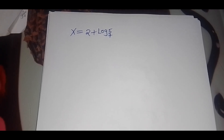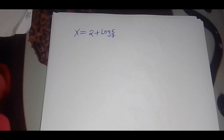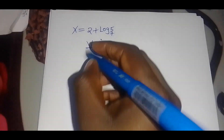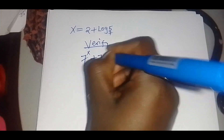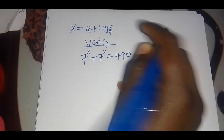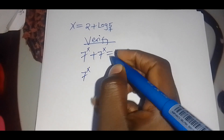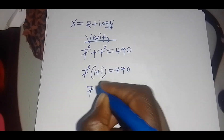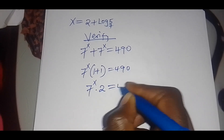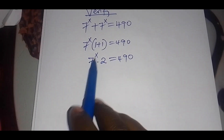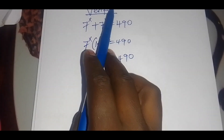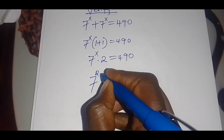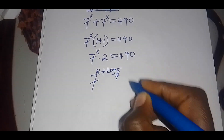So x is equal to 2 plus log base 7 of 5. Now let's verify if this value of x is correct. Remember we had 7 raised to power x plus 7 raised to power x, which should give us 490. This is the same as 7 raised to power x multiplied by 2 equals 490. We substitute the value of x, which is 2 plus log base 7 of 5, so we have 7 raised to power (2 plus log₇5) multiplied by 2, which is supposed to give us 490.